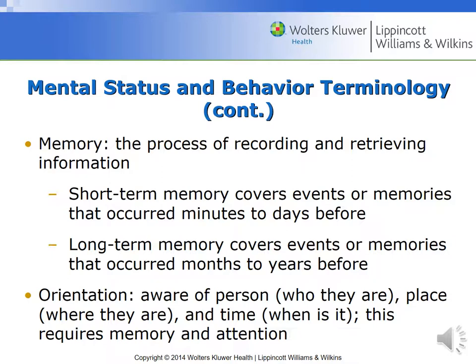When dealing with memory, it is a process of recording and retrieving information. Short-term memory covers events and memories that occurred from minutes to days ago, whereas long-term memory deals with events or memories from months to years ago. Orientation refers to whether they're aware of who they are — that's orientation to person; where they are — orientation to place; and what time it is — orientation to time. This is captured as alert and oriented times three: person, place, and time. Some literature uses alert and oriented times four, with the addition of event.